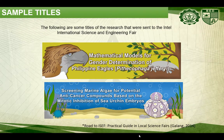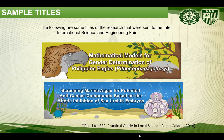These are some titles of research that were sent to the Intel International Science and Engineering Fair. The first one is 'Mathematical Models for Gender Determination of Philippine Eagles.' The second title is 'Screening Marine Algae for Potential Anti-Cancer Compounds Based on the Mitotic Inhibition of Sea Urchin Embryos.'